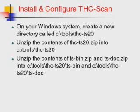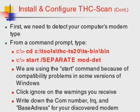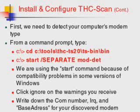Installing and configuring THC Scan is quite simple. On your Windows system, create a new directory called C:\tools\THCTS20. Unzip the contents of TS20.zip into that directory, then unzip the contents of TS bin and TS doc — the first includes the program itself and the doc includes the associated documents. To configure THC Scan, you must detect your computer's modem type. From a command prompt, change into the bin directory and run the mod-det program. Use the start command to run it in a separate window to get around compatibility problems with some versions of Windows.